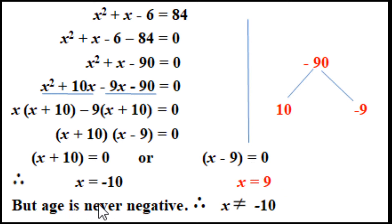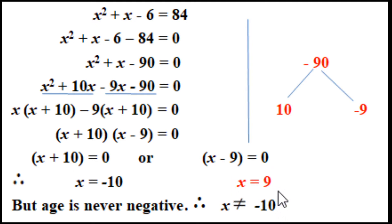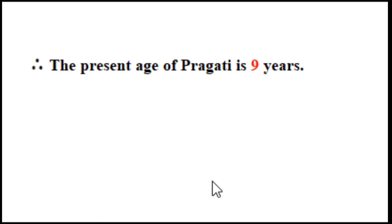So x equals minus 10 or x equals 9. But age is never negative, so x equals minus 10 is rejected. Therefore x equals 9, and the present age of Pragatti is 9 years.